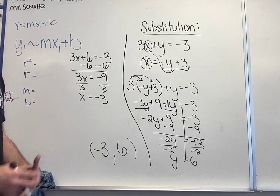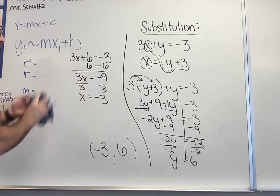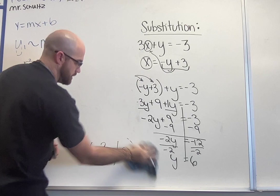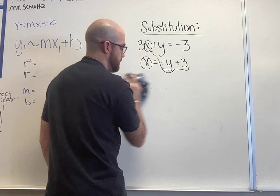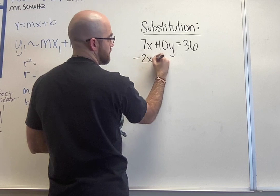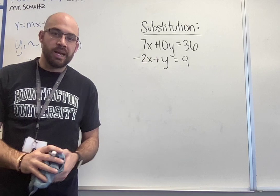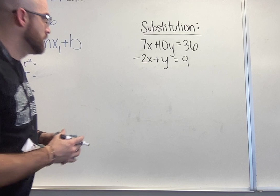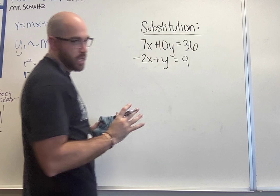This would be substitution where it's really obvious there's one variable completely by itself. I'm going to give you another problem that represents our substitution if it wasn't set up where there was already a variable completely by itself. So here's our second problem. If I had 7x plus 10y equals 36 and my other part here was negative 2x plus y equals 9. For this I got to look through and see what variable I can get by itself or is already most by itself.